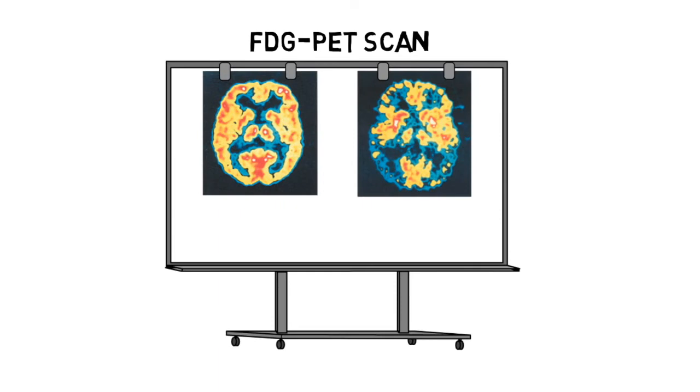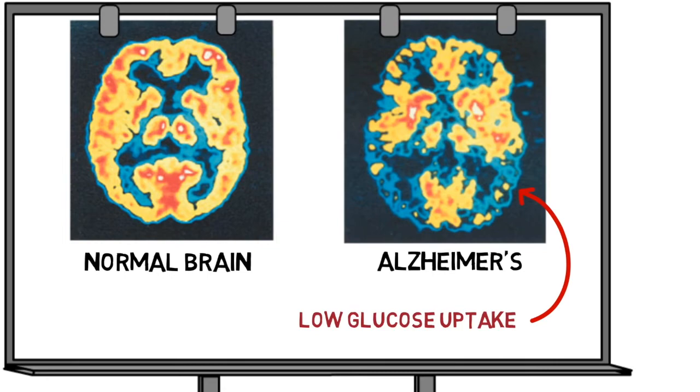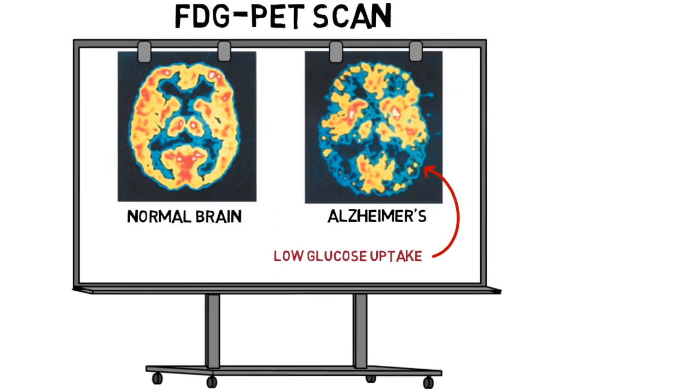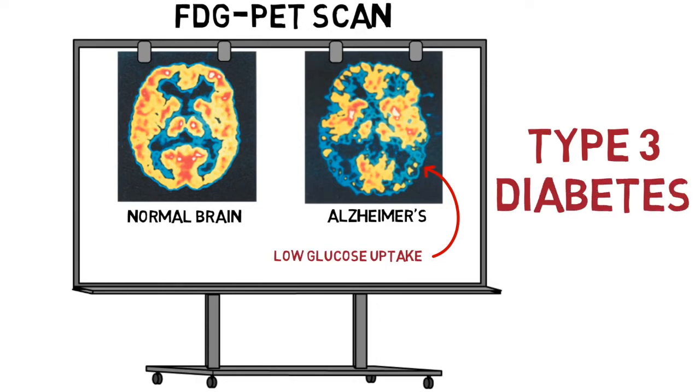PET scans have shown vast differences in a normal brain versus a brain with Alzheimer's. The uptake of glucose is severely decreased, resulting in a lack of available energy for the brain. This is a problem that's also seen in other areas of the body with individuals diagnosed with diabetes, which is why Alzheimer's is now being referred to as type 3 diabetes or diabetes of the brain.